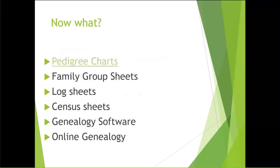So now what? Now you've started your research and you have some information — how are we going to keep track of it? We're going to start with that pedigree chart and fill it in as much as we can. I suggest using pencil while you're still doing your research. Online you can find what they call family group sheets — these are sheets listing a husband, a wife, and all their children, essentially a nuclear family. Log sheets keep track of when and where you wrote and who you spoke to. Census sheets: you may want to keep a blank copy of a census sheet so that you know what the columns line up to be.